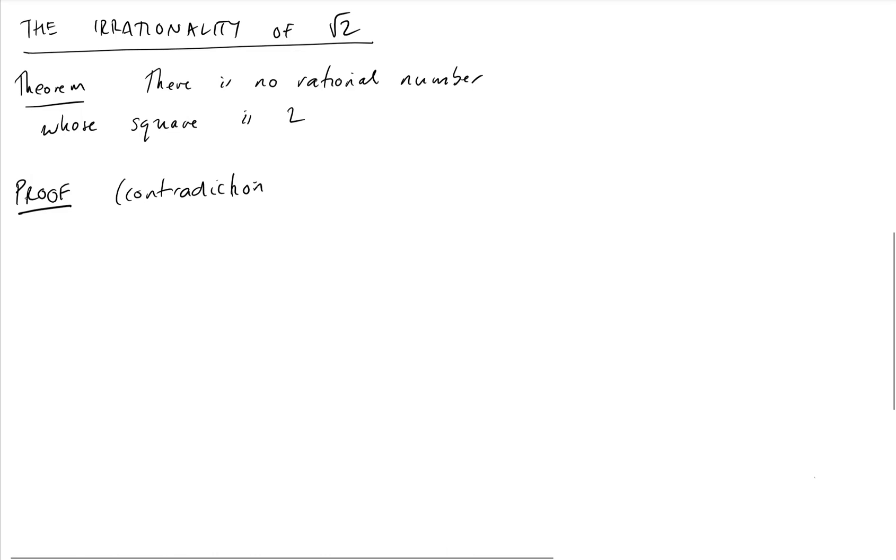So to negate the statement, we're just going to assume there is a rational number whose square is 2. Now once we've assumed this, that means we can actually write this number down. So let p over q be such a number.